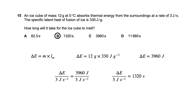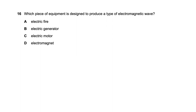Question sixteen asks which piece of equipment produces a type of electromagnetic wave. An electric generator and motor involve current — only an electric field, not a full electromagnetic wave. An electromagnet similarly. An electric fire emits light, which is an electromagnetic wave. So the electric fire is the right answer.